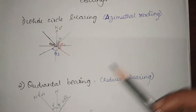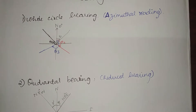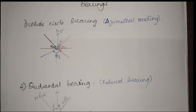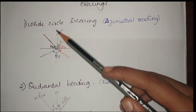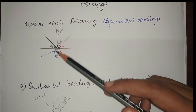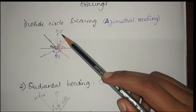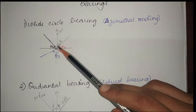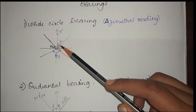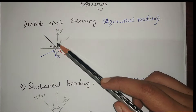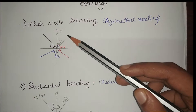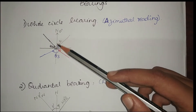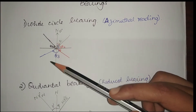Whole circle bearing is also called as azimuthal reading. Quadrantal bearing is called as reduced bearing. In whole circle bearing, we have our magnetic north and every angle is measured with respect to magnetic north only — whether it is in the first, second, third, or fourth quadrant, it is always measured from the magnetic or true meridian north.